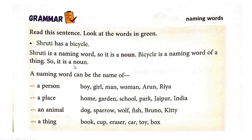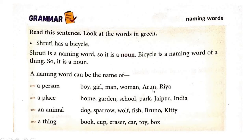Bicycle is also a naming word — B-I-C-Y-C-L-E. Bicycle is a name of a thing, so it is also a noun. Shruti is a noun, bicycle is a naming word — they are both nouns. Shruti is a name of a girl and bicycle is a name of a thing. Naming words are the names of people, animals, places, or things.